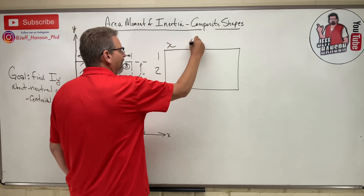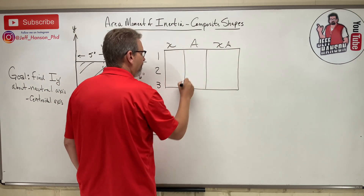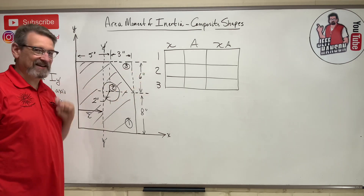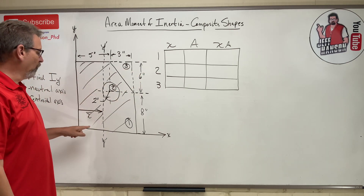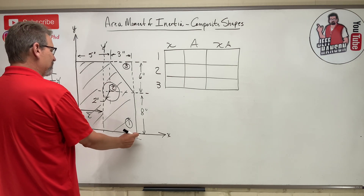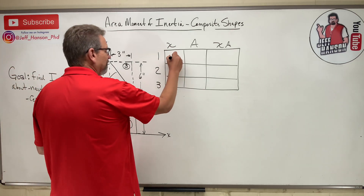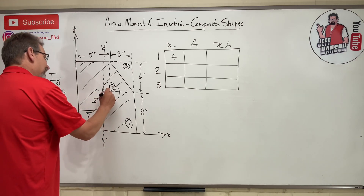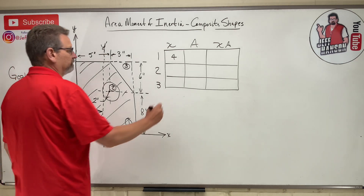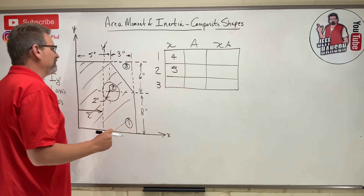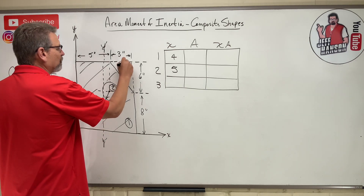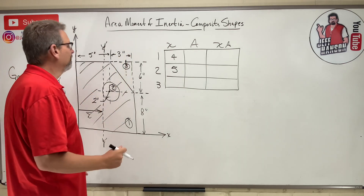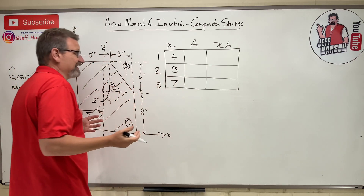We've got columns for area A, centroid x, and x*A. Remember: garbage in the table, garbage out for an answer. Shape number one — the rectangle is 8 inches wide, so the centroid is at half that, which is 4. Shape number two — the circle's centroid is right at the dot, which is 5 inches over. Shape number three — the triangle's centroid is at 1/3 of the base, so 8 minus one-third of 3 (which is 1) equals 7.